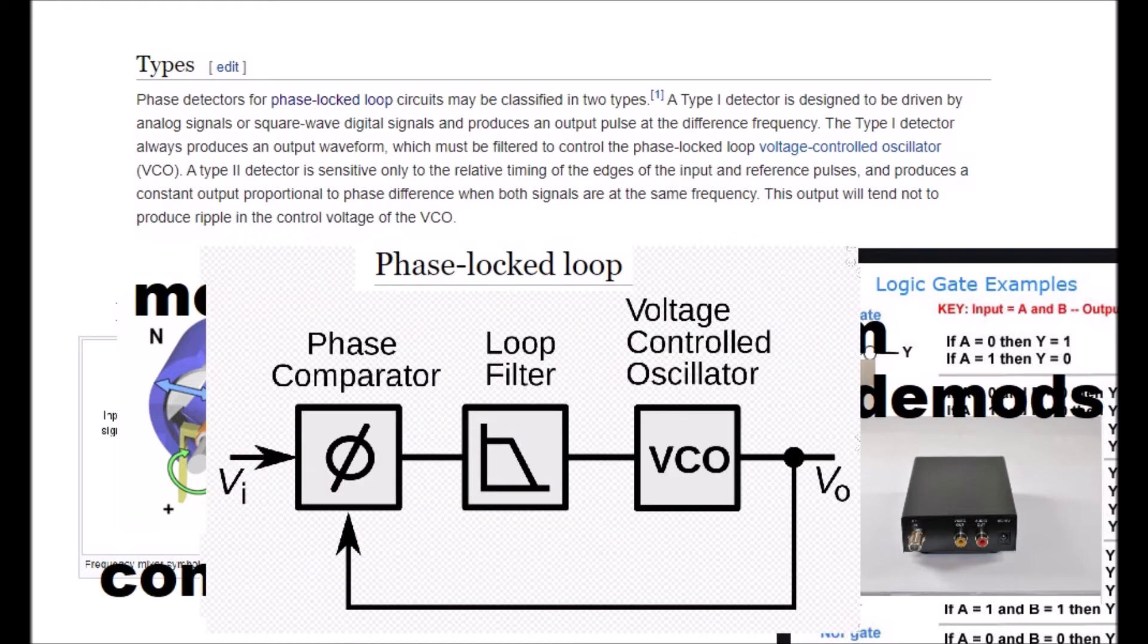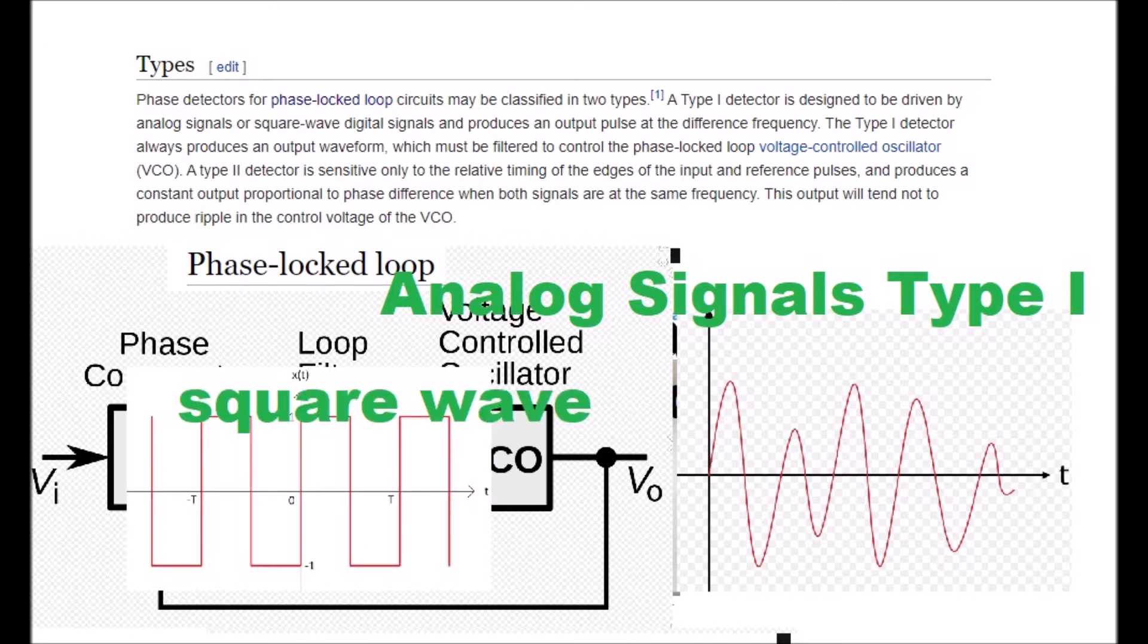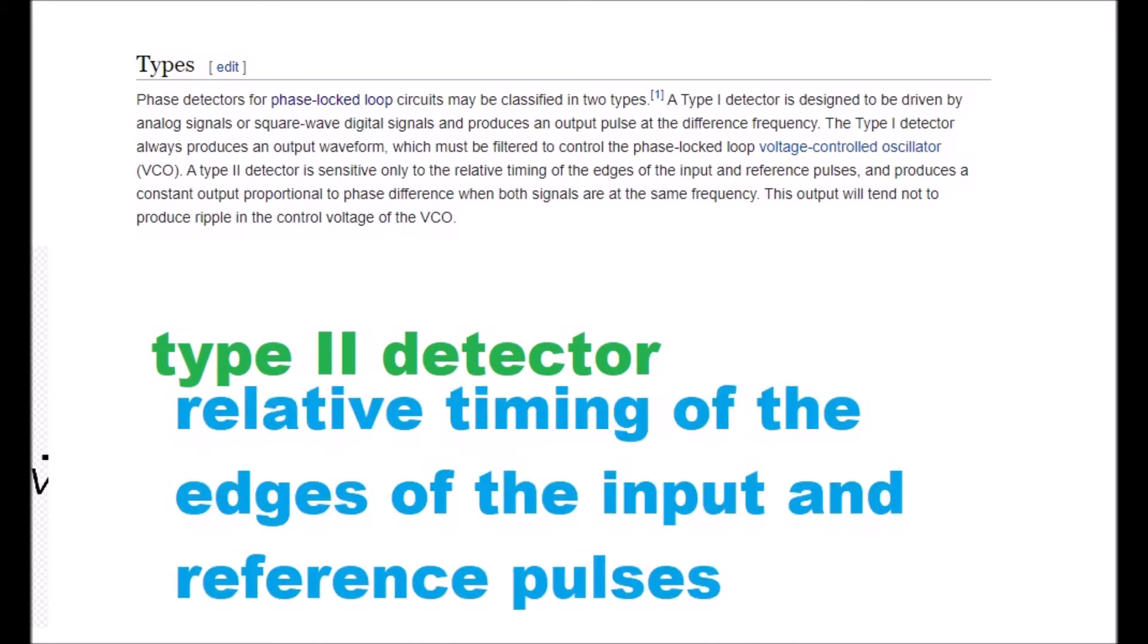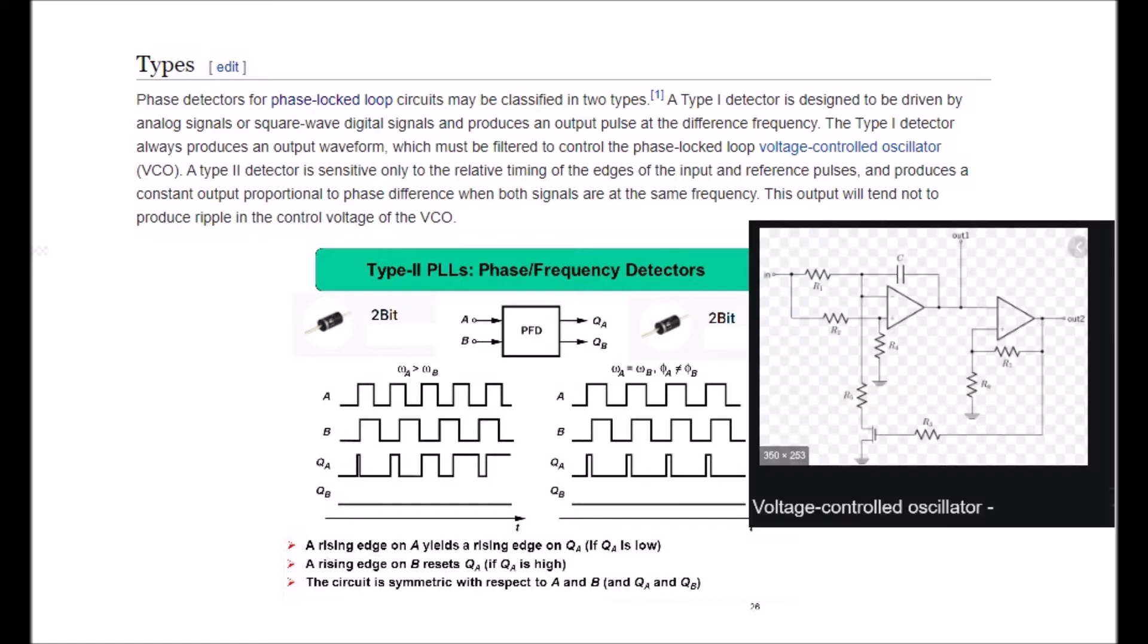Types. Phase detectors for phase locked loop circuits may be classified in two types. A type 1 detector is designed to be driven by analog signals or square wave digital signals and produces an output pulse at the difference frequency. Type 1 detector always produces an output waveform which must be filtered to control the phase locked loop voltage controlled oscillator. A type 2 detector is sensitive only to the relative timing of the edges of the input and reference pulses and produces a constant output proportional to phase difference when both signals are at the same frequency. This output will tend not to produce ripple in the control voltage of the VCO.